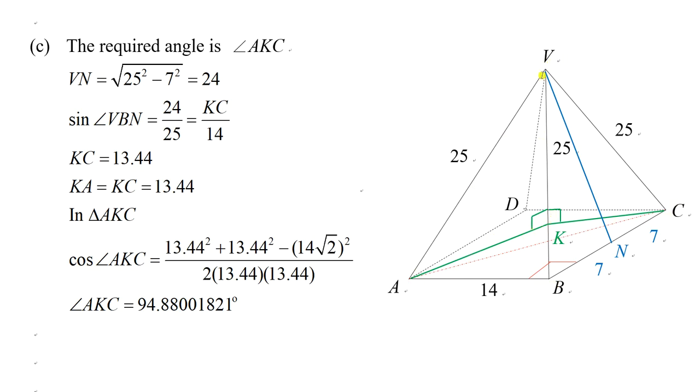How do we find the length of KC and KA? First, we can draw a line, the blue line VN. That's what we did in part B. We drew it but haven't found the length of this one.